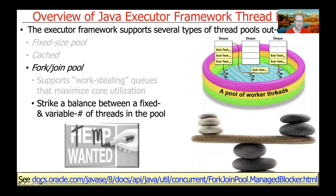This approach helps strike a balance between fixed-sized and variable-sized thread pools. There are also cool features called managed blockers, which you can use with the common fork-join pool to allow the pool to temporarily expand itself and then shrink when operations block. This is more powerful than the cached thread pool mechanism, and we'll spend roughly a whole week covering the fork-join pool later in the class.